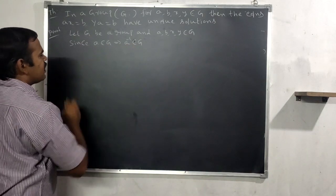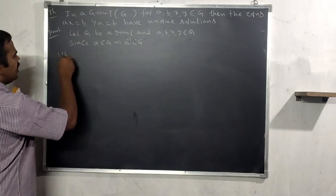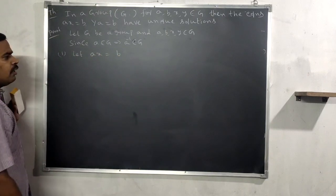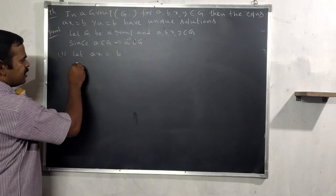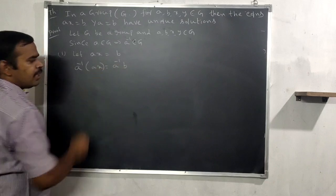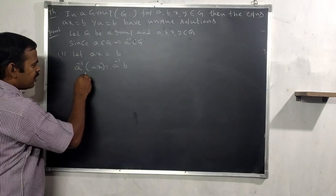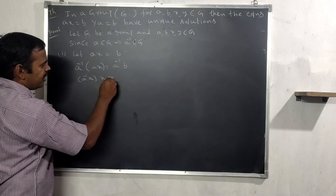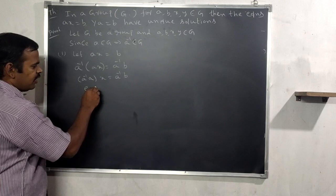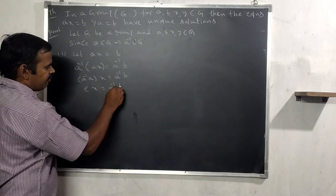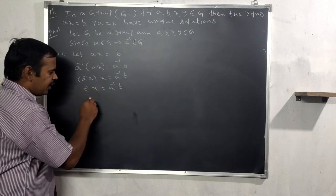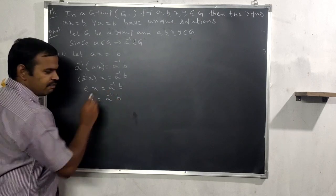Since a belongs to G, a inverse belongs to G. For the first condition, consider ax = b. Pre-multiplying both sides by a inverse: a inverse times ax = a inverse times b. Then (a inverse a) times x = a inverse b, which gives e times x = a inverse b, and therefore x = a inverse b.